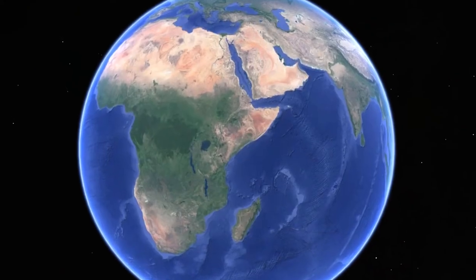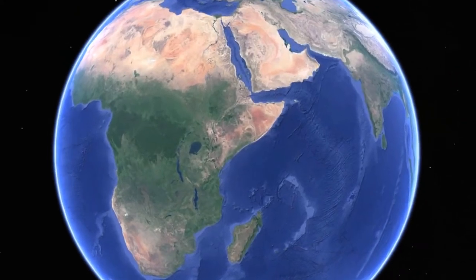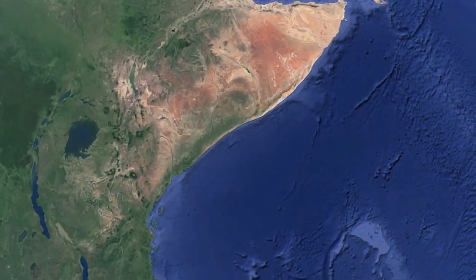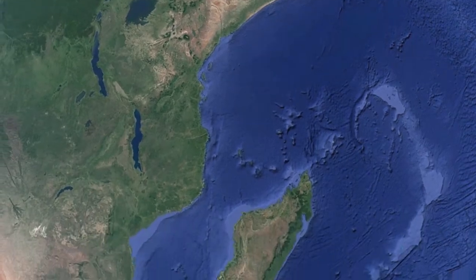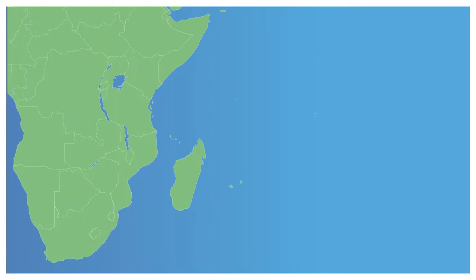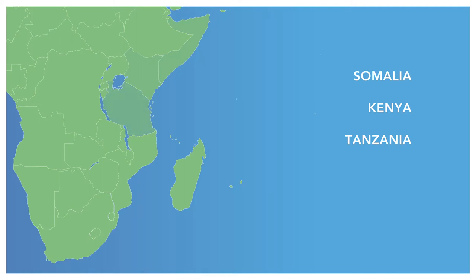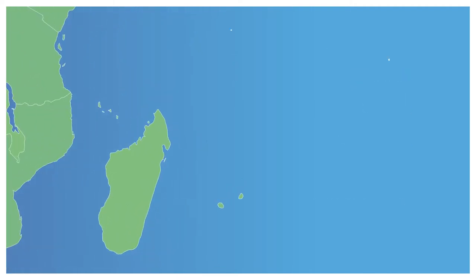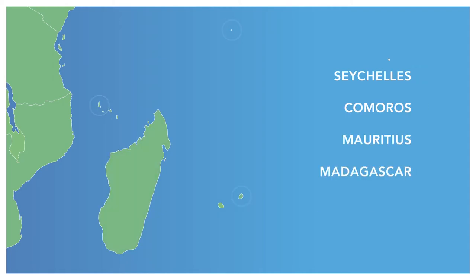The Western Indian Ocean is a socio-political and climatic region which spans across a large latitudinal range from Somalia in the north to the tip of South Africa in the south. It includes ten countries. Five of them are mainland East African states: Somalia, Kenya, Tanzania, Mozambique and South Africa. Five are island states: Seychelles, Comoros, Mauritius, Madagascar and the French Territories.